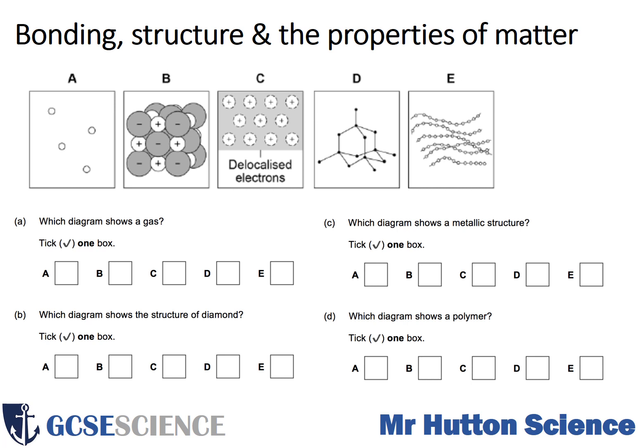In diagram E, we've got long chains of particles lying over the top of one another. Question A is: which diagram shows a gas? Question B: which diagram shows the structure of diamond? Question C: which diagram shows a metallic structure? And question D: which diagram shows a polymer? You're selecting from a range of alternatives. Pause the video now, attempt the question, then unpause to reveal the mark scheme.